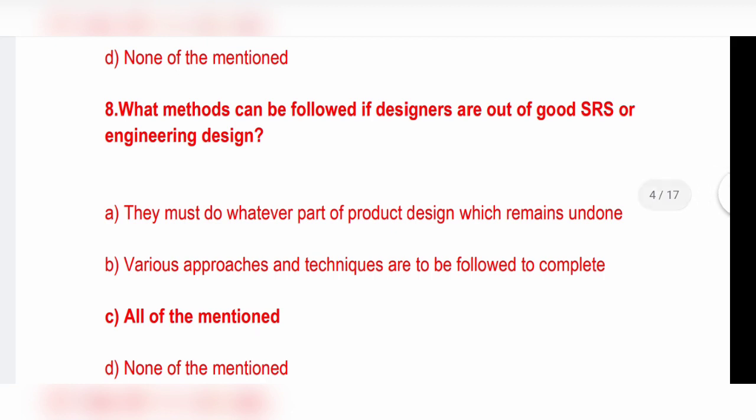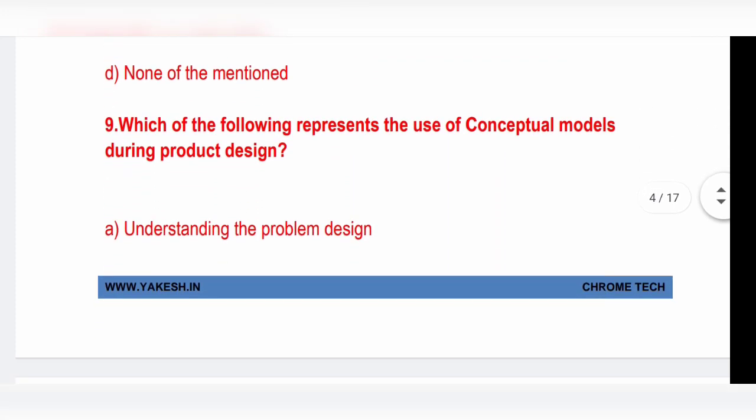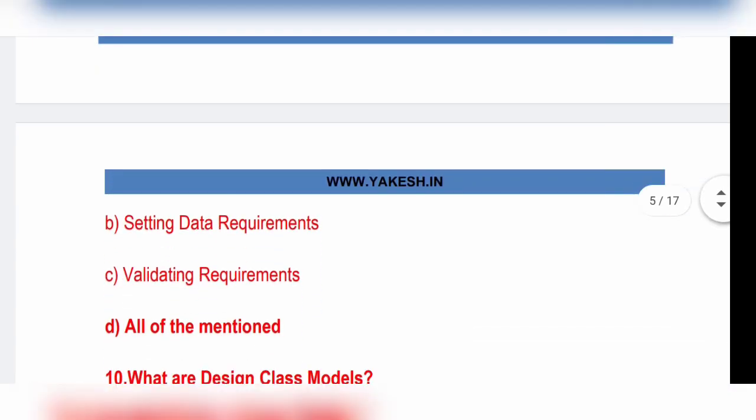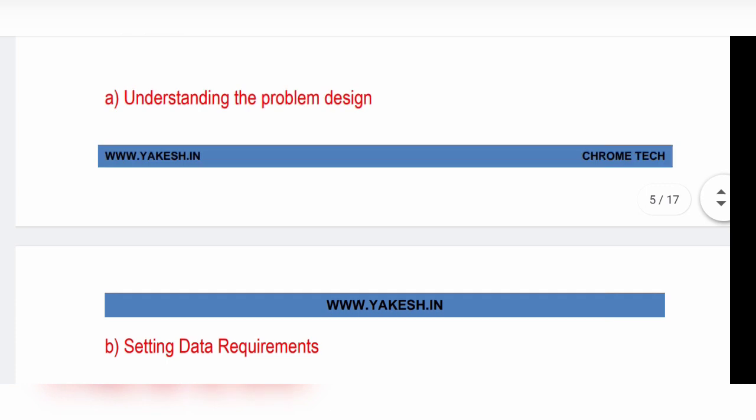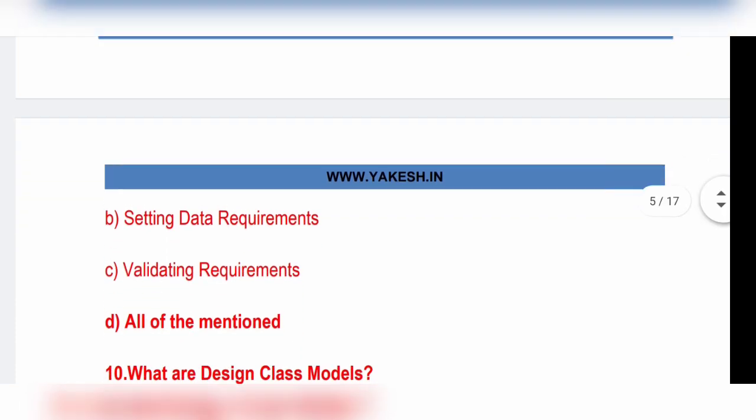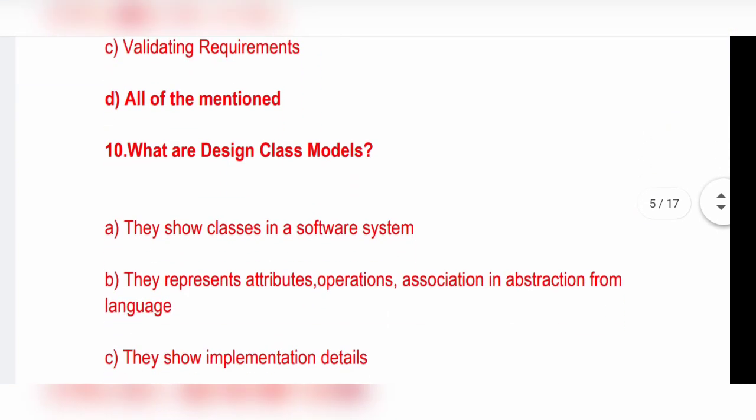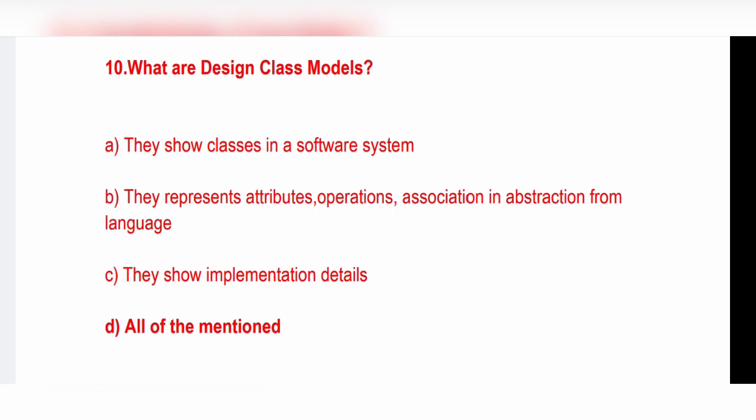What method can be followed if designers are out of good SRS or engineering design? Option C, all the above. Which of the following represents the use of conceptual model during product design? Option D, all the above is the correct answer. Understanding the problem design, setting data requirement, validating requirement - all the answers are right. So option D, all the above. What are design class models? Option D, all of the mentioned.